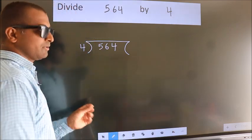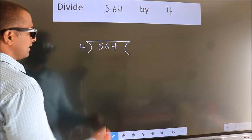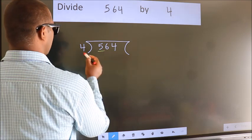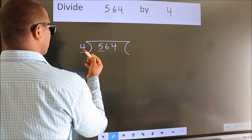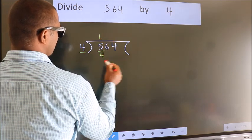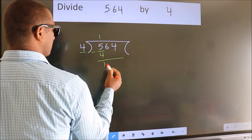This is your step 1. Next, here we have 5, here 4. A number close to 5 in the 4 table is 4. Once 4, now we should subtract. We get 1.